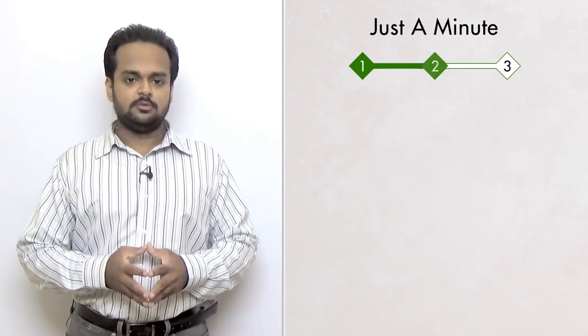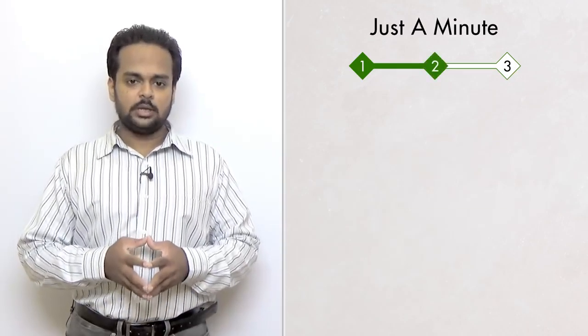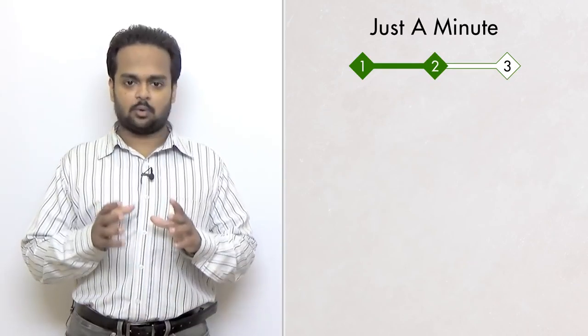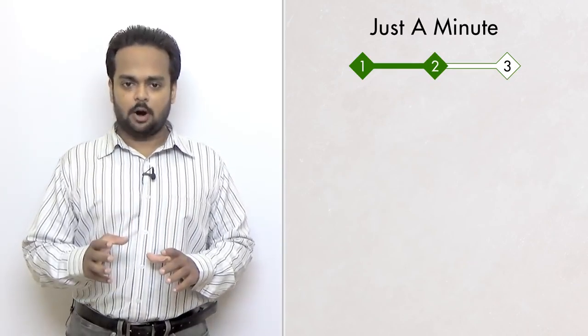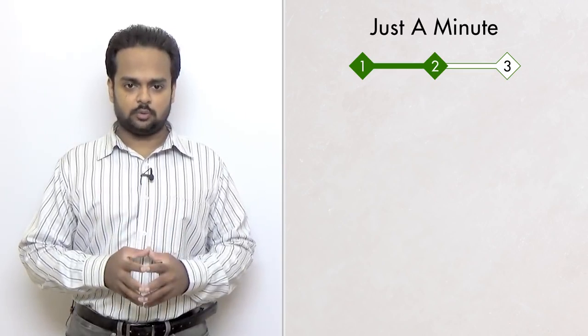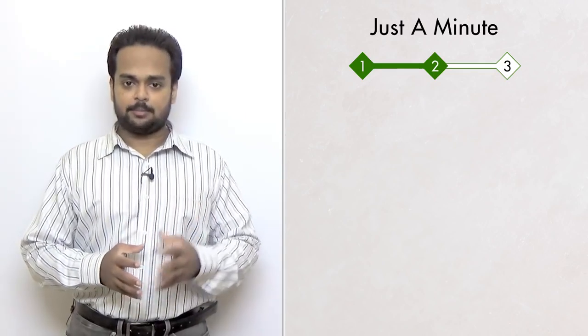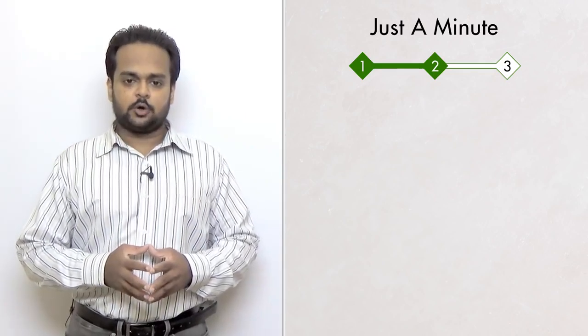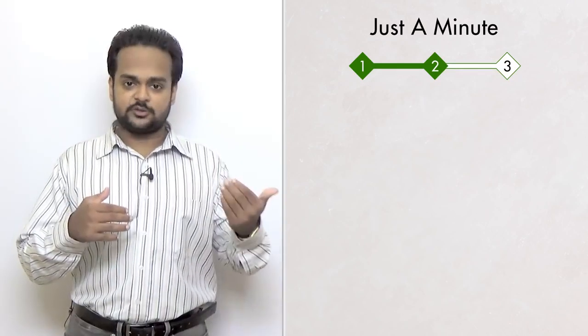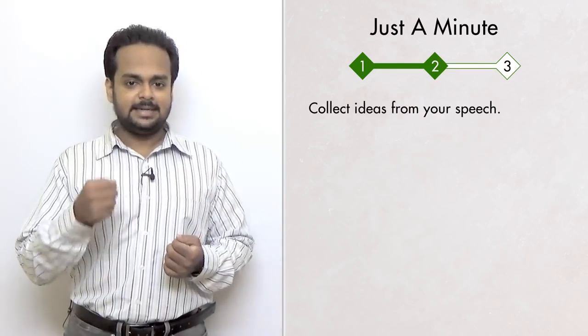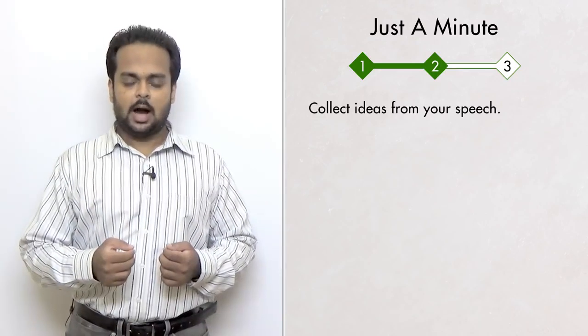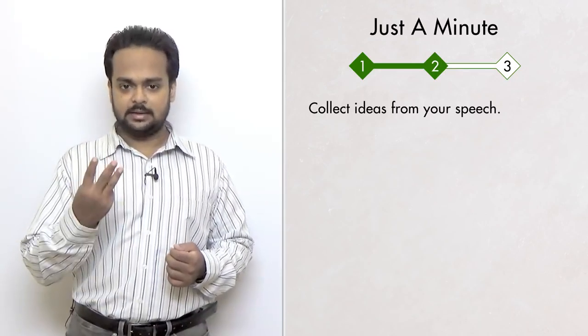Now we're going to move on to stage two. Here's where we're really going to start building our fluency. The first part of stage two is making notes. So you can use a paper and pen now. And you're going to think back to the speech that you just gave and collect ideas that you came up with. In my speech, I remember that I had three ideas.